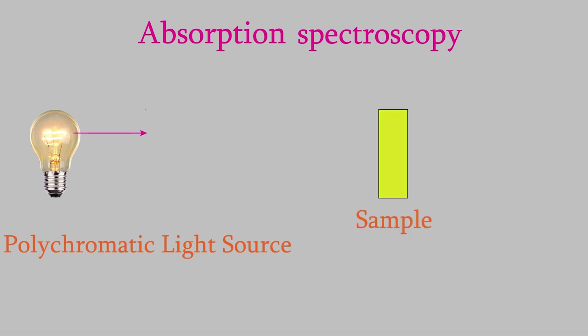In general, here's how we do it. We start with a polychromatic light source. In other words, a light source that emits a range of different wavelengths. We shine this light on a sample.